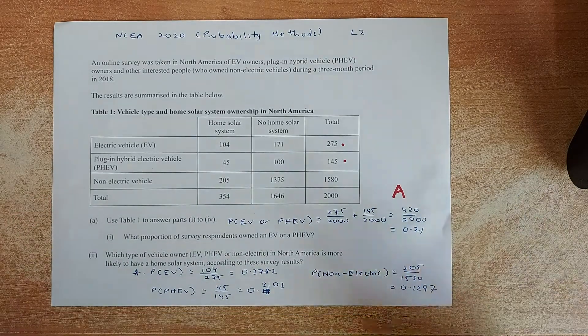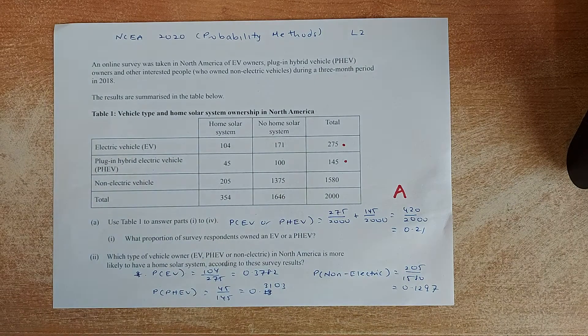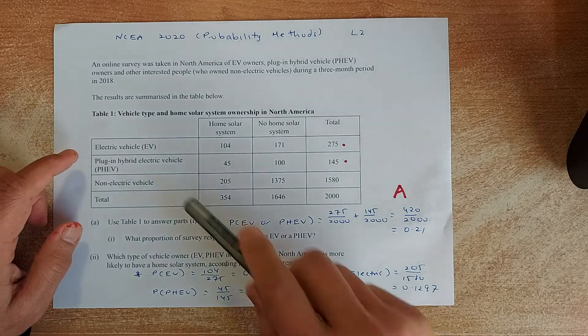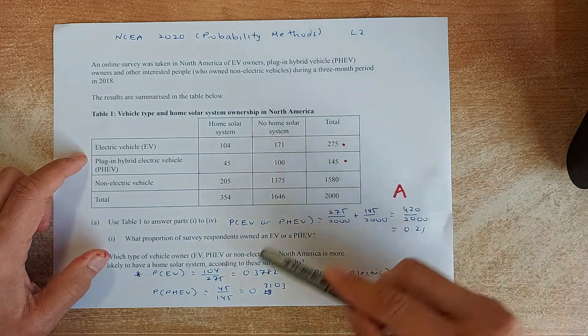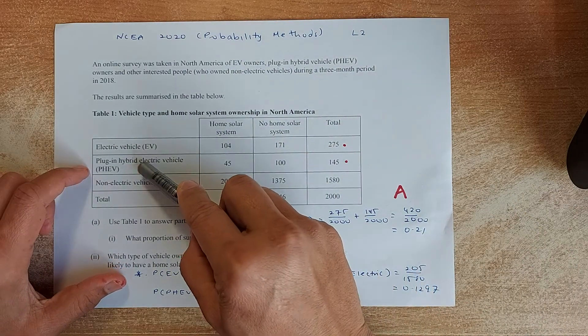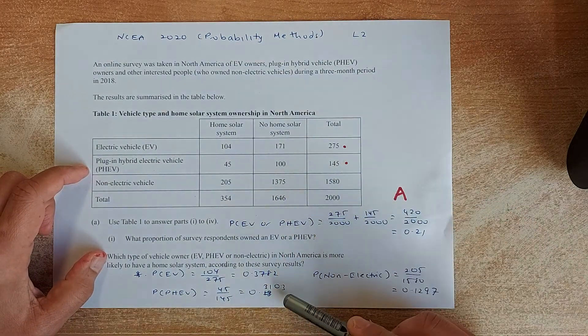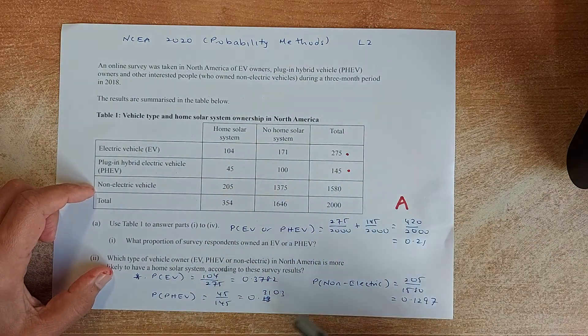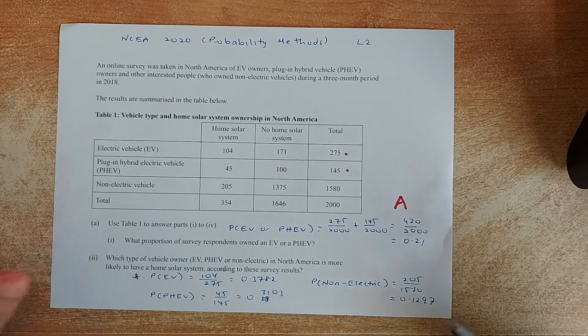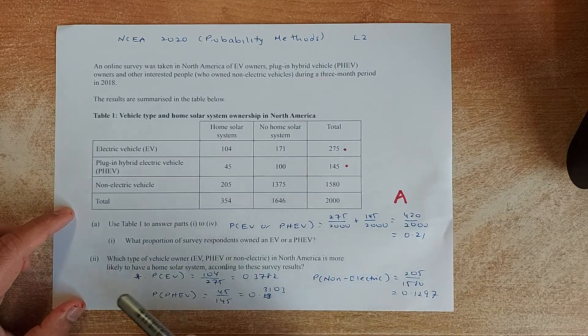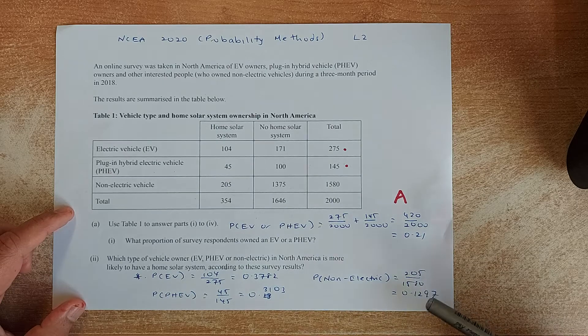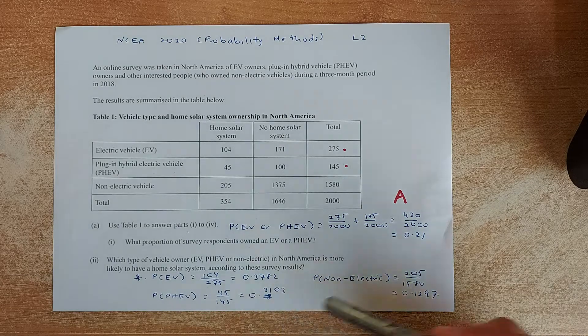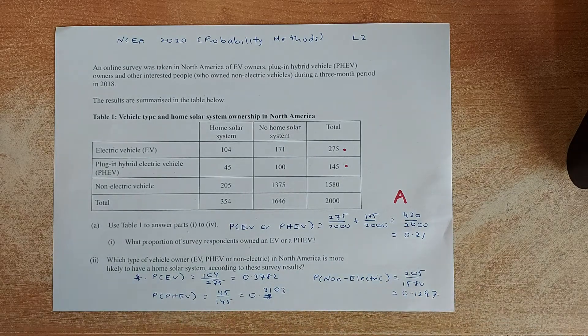Great. The next question is, what type of vehicle, either EV, PHV or non-electric vehicle, is more likely to have a home solar system? So we are going to calculate that. So for the EV people, it's going to be 104 have home solar system out of total of 275 will give you 0.3782. For the PHEV people, it's going to be 45 out of 145 will give you 0.3103. For the non-electric people, it's going to be 205 over 1580, and that will give you 0.1297. And again, you have to answer the question, which of them is more likely to have a solar system? So you have to look at the highest probability. And again, the answer is the people with an electric vehicle will have a higher chances of a solar system than the other two categories. And the answer is going to be the electric vehicle people.